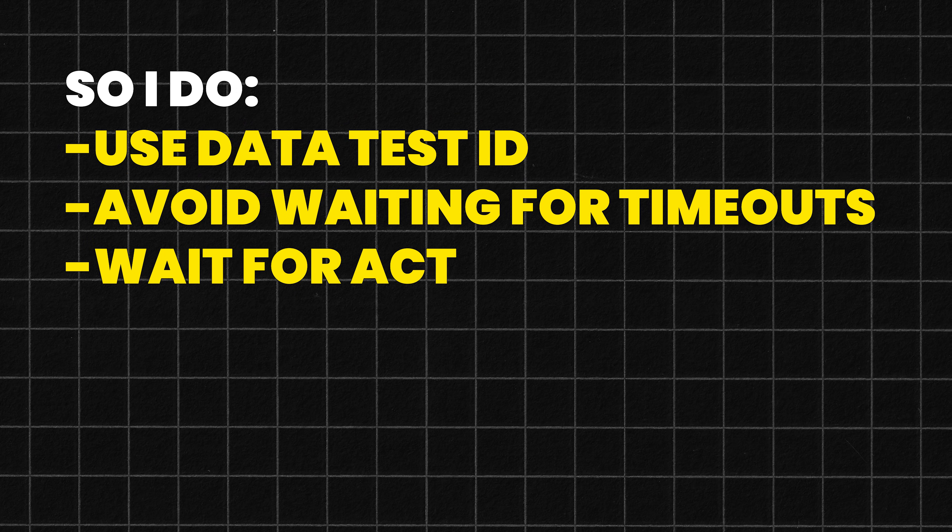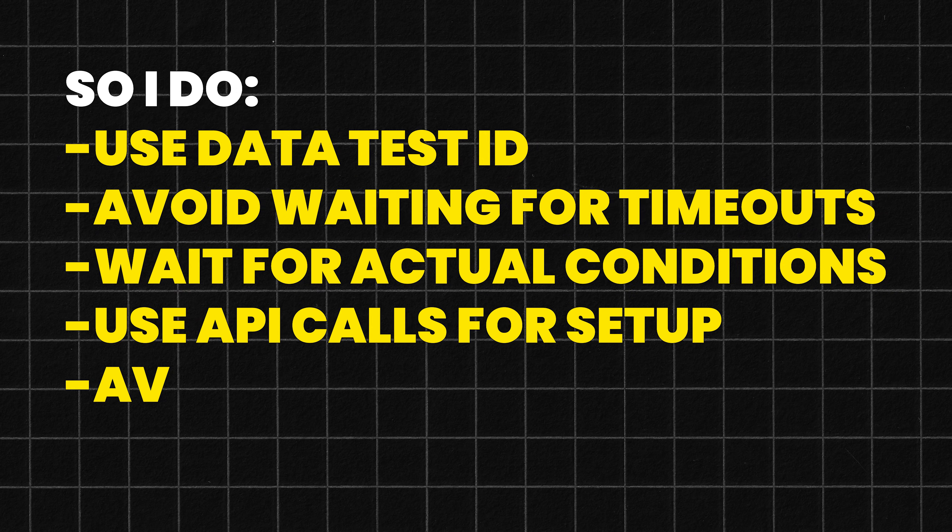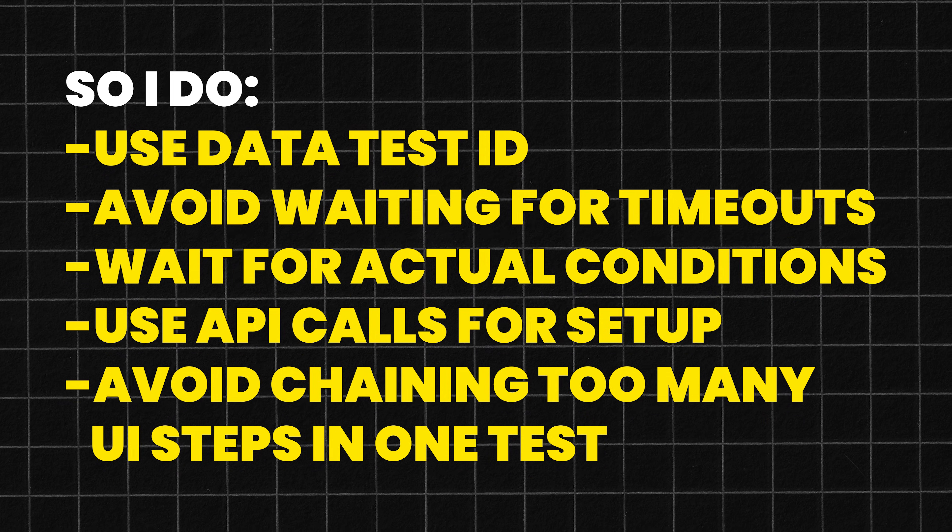A crucial question because flaky tests break trust: how do you handle flakiness and dynamic UI elements? Flaky tests usually come from timing issues or unstable locators. So I use data-test-ID everywhere, avoid waiting for timeouts, wait for actual conditions, use API calls for setup, and avoid chaining too many UI steps in one test. When something fails in CI, the first thing I check is: did the element change, did the network slow down, or did the API return something unexpected? Flakiness is usually not the tool — it's the environment or the selector.